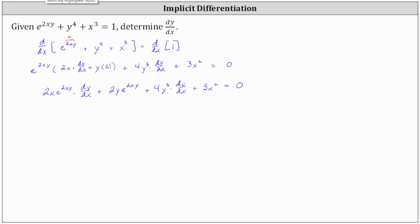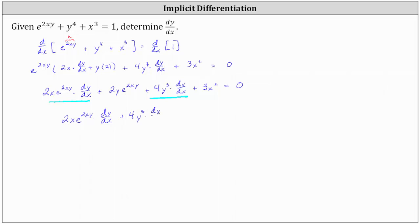We need to isolate the dy/dx terms on one side and the non-dy/dx terms on the other. We have two dy/dx terms, so we leave those on the left and subtract 2y e to the power of 2xy and 3x squared from both sides. This gives us 2x e to the power of 2xy times dy/dx plus 4y cubed times dy/dx equals negative 2y e to the power of 2xy minus 3x squared.